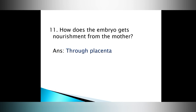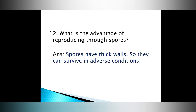Question number eleven: how does the embryo get nourishment from the mother? Answer: through the placenta. Question number twelve: what is the advantage of reproducing through spores? Answer: spores have thick walls, so they can survive in adverse conditions.